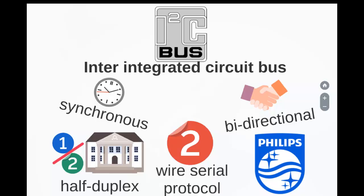Master and slave devices can act as either transmitter or receiver. Since there is a master that creates the clock, I2C is a synchronous mode of communication. Since both master and slave can act as either transmitter or receiver, it is bidirectional communication. It is half-duplex, meaning data can be transferred from only one side at a time. It is also a two-wire protocol, originally intended to provide easy communication between a microcontroller system and peripheral chips in a television set.